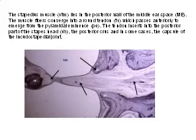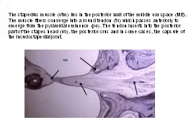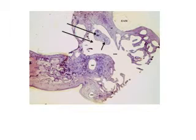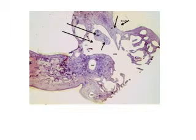This is a cross-section of the middle ear at the level of the epitympanum. The epitympanum is separated from the external auditory canal by a vertical plate of bone called the scutum. The epitympanum communicates with the mastoid antrum via the aditus.